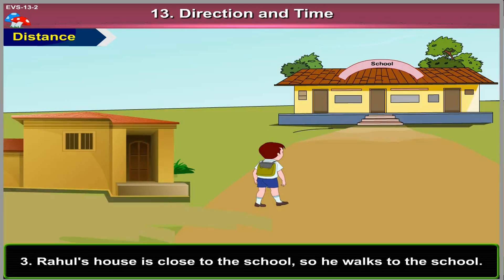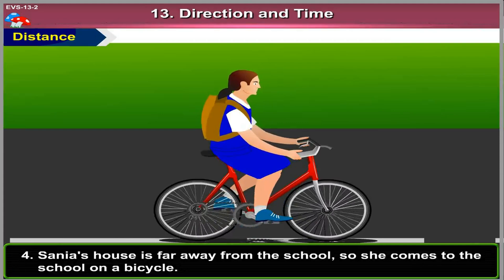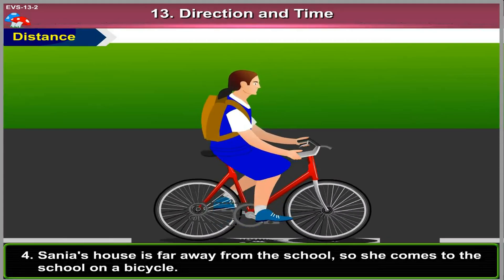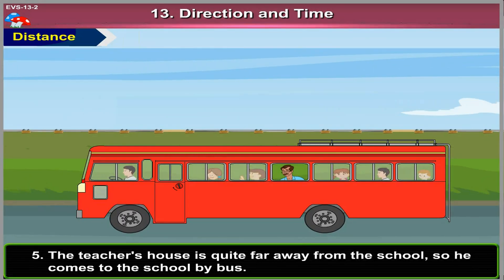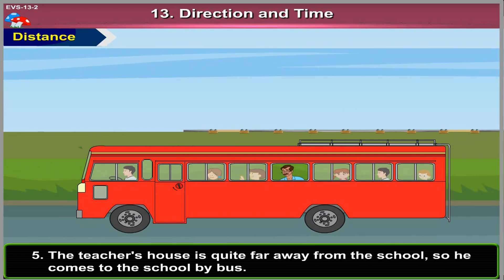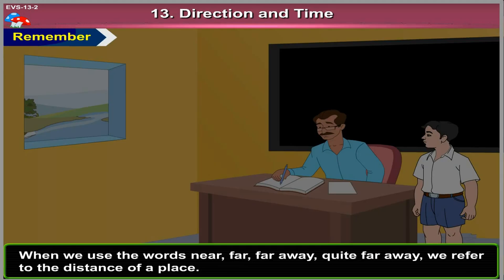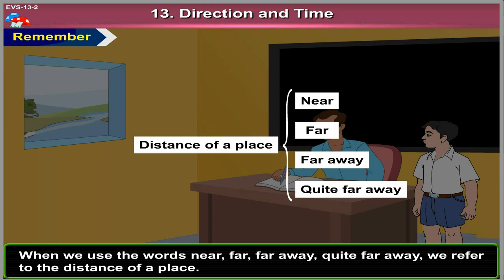Rahul's house is close to the school, so he walks to the school. Sania's house is far away from the school, so she comes to the school on a bicycle. The teacher's house is quite far away from the school, so he comes to the school by bus. Remember, when we use the words near, far, far away, quite far away, we refer to the distance of a place.